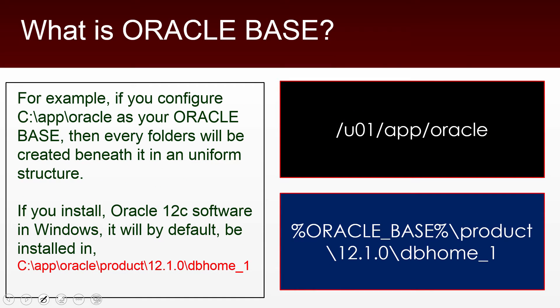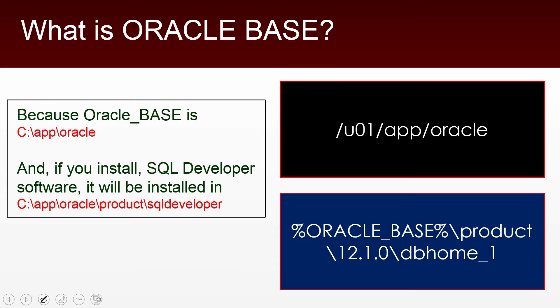For example, if you configure C:/app/Oracle as your Oracle Base, then every folder will be created beneath it in a uniform structure. If you want to install Oracle 12c software in Windows, it will by default be installed in C:/app/Oracle/product/12.1.0, which is the version of the software, followed by /db_home_1, which would be the Oracle Home — because you have configured Oracle Base as C:/app/Oracle.